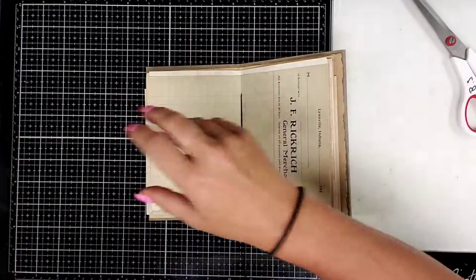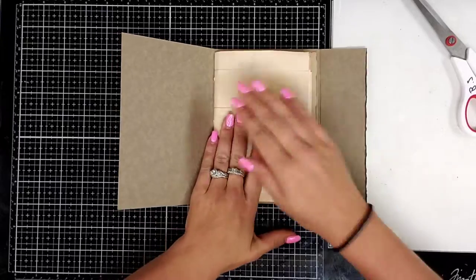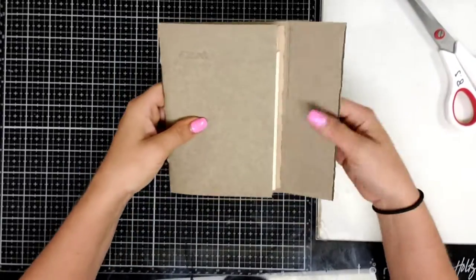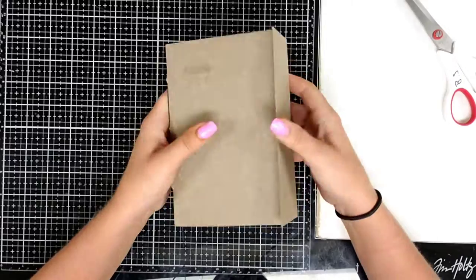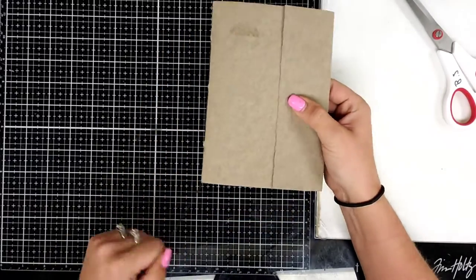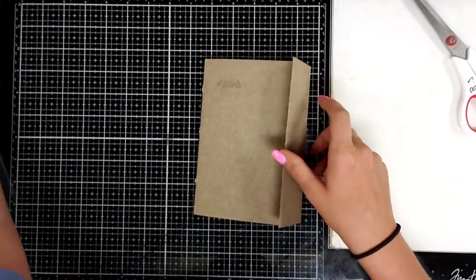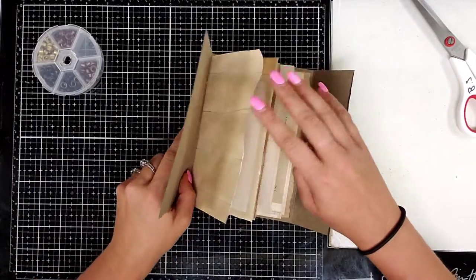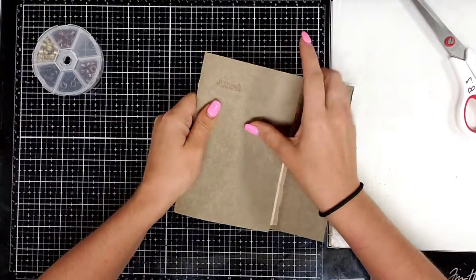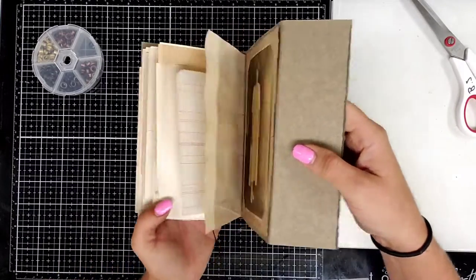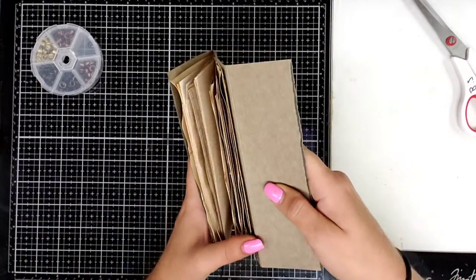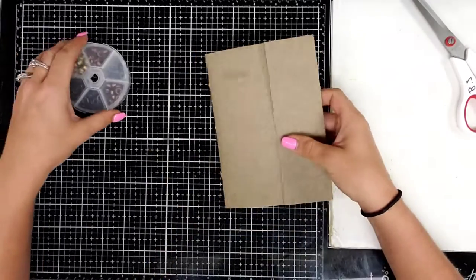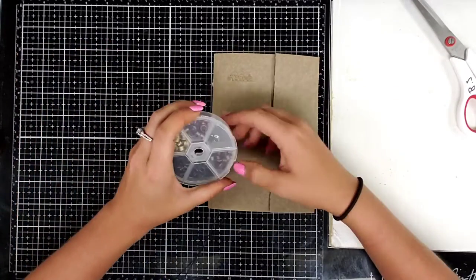And there you have it. Actually we're not done I got to show you guys how to close it. So we're gonna add a closure to this one. She's kind of thick so she definitely needs a closure. So what I'm gonna do, I probably shouldn't have added that many pages to her but that's okay. I wanted to make sure there was plenty of room for them to journal.